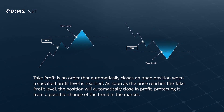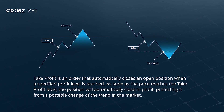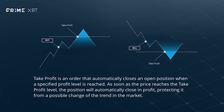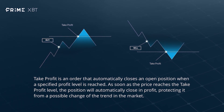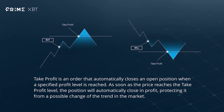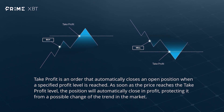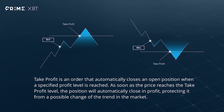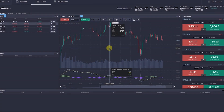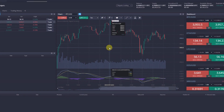Take Profit is an order that automatically closes an open position when a specified profit level is reached. As soon as the price reaches the Take Profit level, the position will automatically close in profit, protecting it from a possible change of the trend in the market.